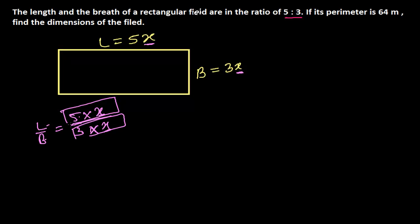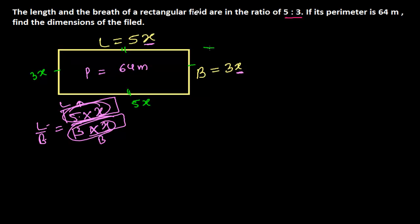So we can say the length is 5X and the breadth is 3X. Our perimeter is 64 meters. Since opposite sides of a rectangle are equal, this side and the opposite side are both 3X, and both lengths are 5X. The label 3X represents the whole breadth side, and 5X represents the whole length side.